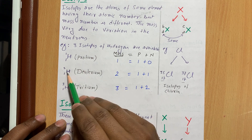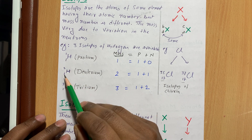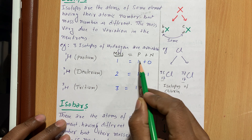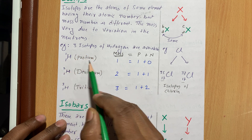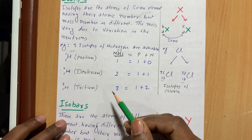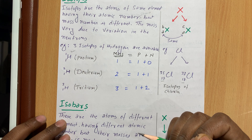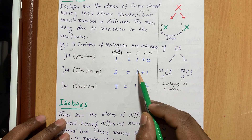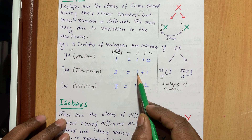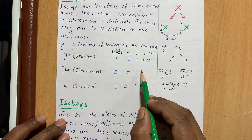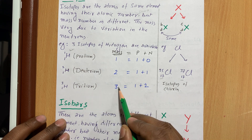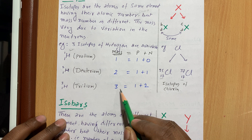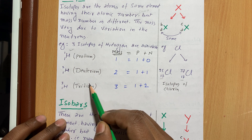All three hydrogen isotopes have atomic number 1, equal to the number of protons. For protium: mass 1, proton 1, so neutrons = 0. Approximately 98% of hydrogen in the atmosphere is protium. For deuterium: mass 2, proton 1, so neutrons = 1. For tritium: mass 3, proton 1, so neutrons = 2. These three — protium, deuterium, and tritium — are the three isotopes of hydrogen.